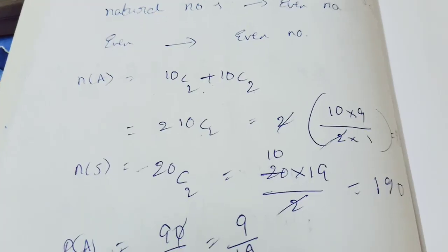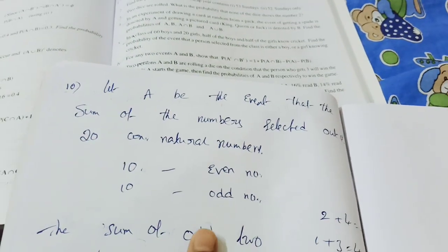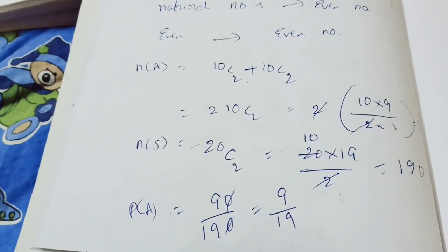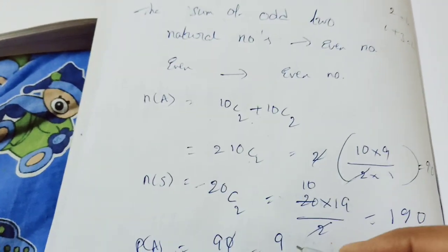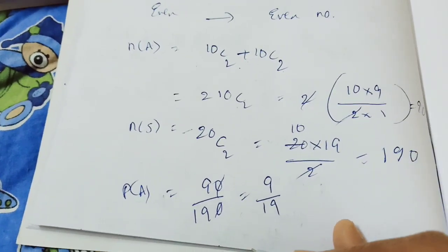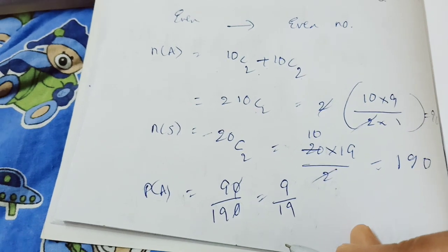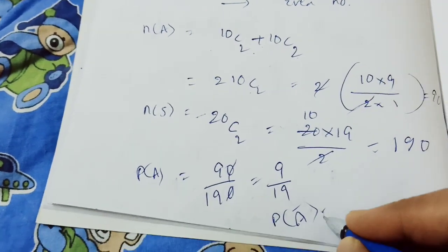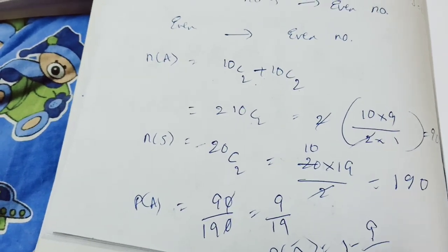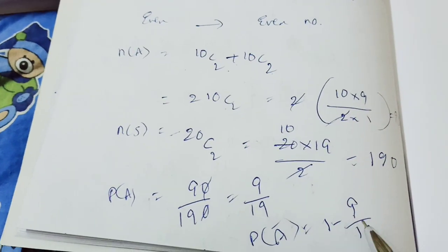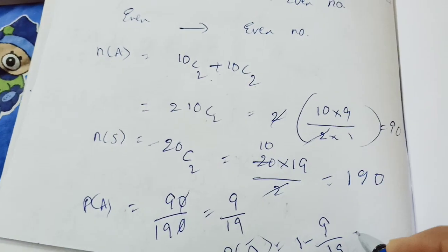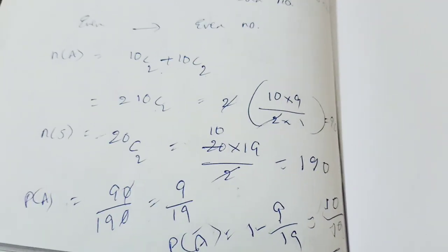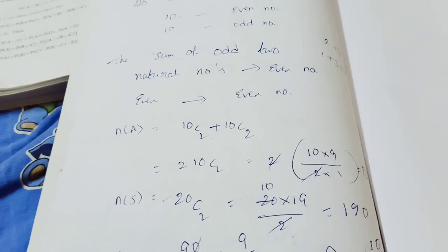Second option — the sum is an odd number. P(A bar) = 1 minus P(A). That is 1 minus 9 by 19. So 19 minus 9 is 10. The answer is 10 by 19.